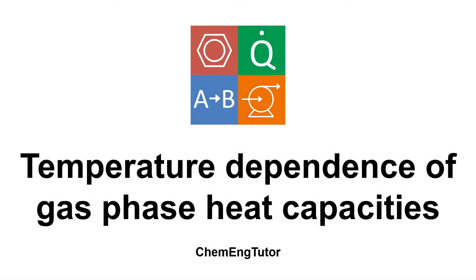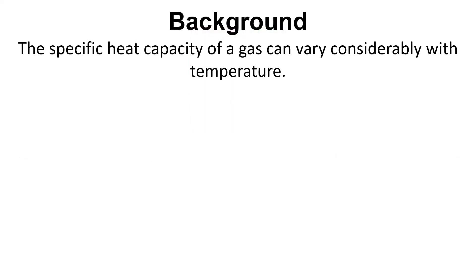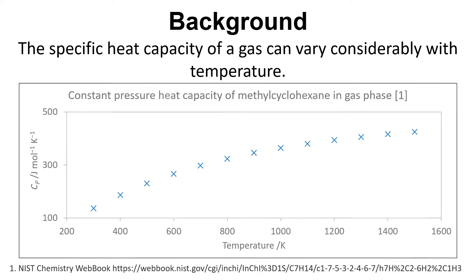In this video we're going to take a look at the temperature dependence of gas phase heat capacities. The specific heat capacity of a gas can vary very considerably with temperature, and here's an example for methylcyclohexane. You can see that as the temperature goes up there's this variation in the specific heat capacity of the gas.